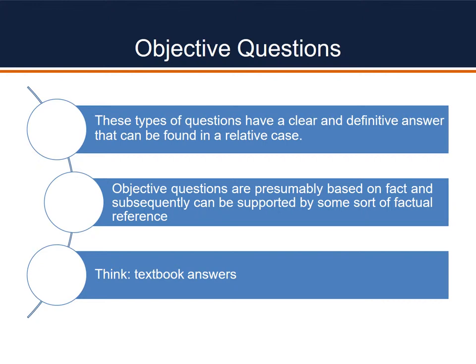Let's move on to our second type of questions: objective questions. Where subjective questions don't really have a right or wrong answer, objective questions do. They have a clear and definitive answer — think Google, not Wikipedia. So in this instance, if I asked you what is the atomic weight of copper, you could go to the Google machine and easily find that, or look in the back of your chemistry book at the periodic table of elements and you could find the answer. Objective questions are typically based on fact and therefore can be found to be factual with some sort of factual reference.